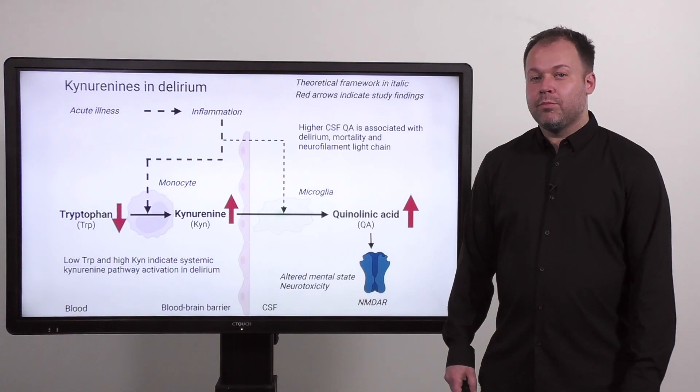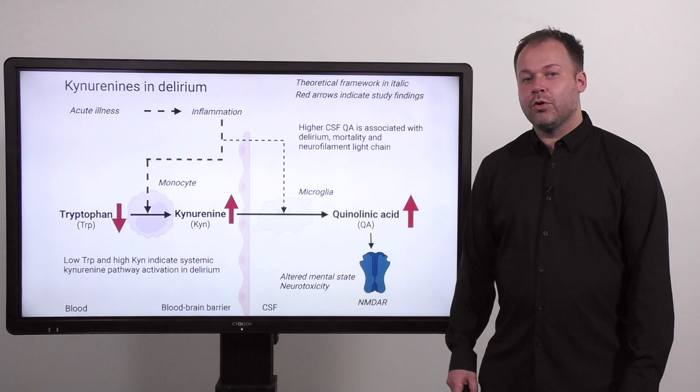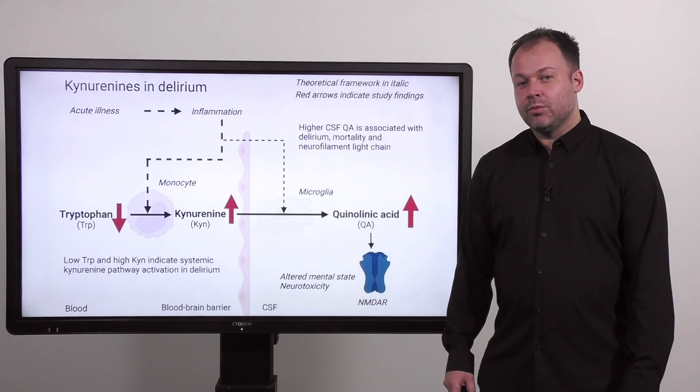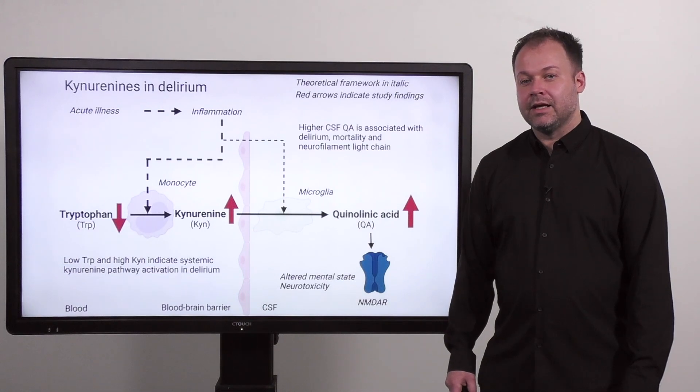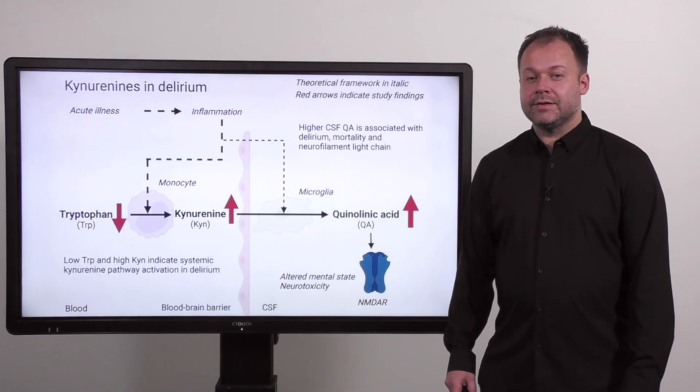This leads to our proposal based on our paper, and this is that delirium could be due to the effect of acute illness on inflammation, which induces the kynurenine pathway, and ultimately leads to elevated quinolinic acid in the brain, which can interact with the NMDA receptor. This could lead to an altered mental state, but also to neurotoxicity.